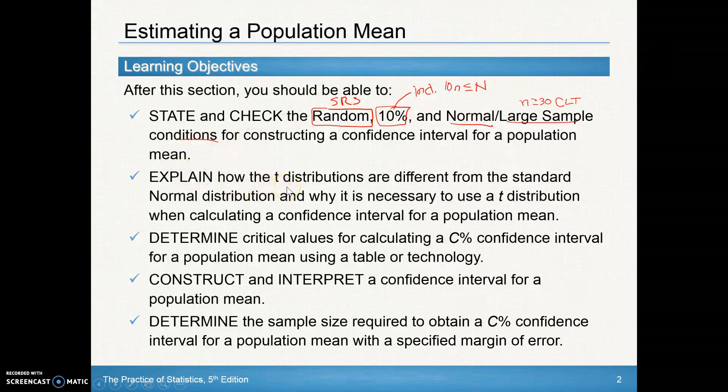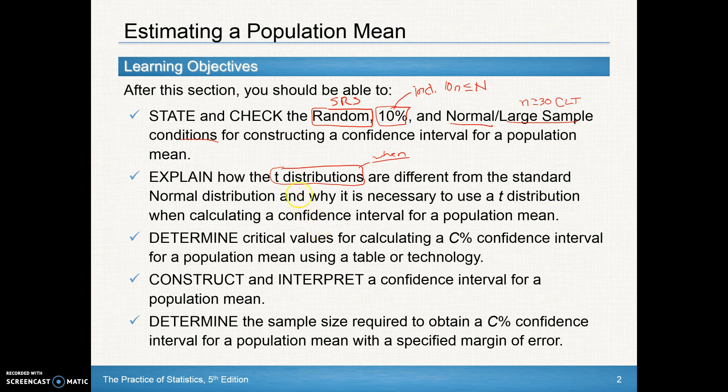We'll also look at explaining how t distributions—that's something new here—are different from the standard normal distribution and why it's necessary to use the t distribution when calculating a confidence interval for a population mean. We'll determine critical values. The last chapter was z stars, so because we're using a t distribution, we'll be looking at calculating a t star for this section and we'll be using a new table, table B, and then technology resources are available in Launchpad as tech corners at the top of the chapter in the online textbook.